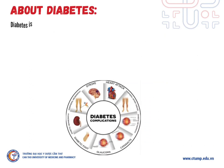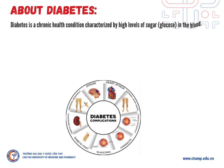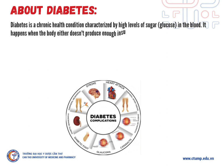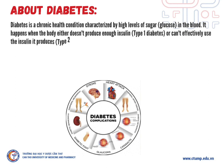About diabetes. Diabetes is a chronic health condition characterized by high levels of sugar in the blood. It happens when the body either does not produce enough insulin, which is type 1 diabetes, or cannot efficiently use the insulin it produces — that's type 2 diabetes.